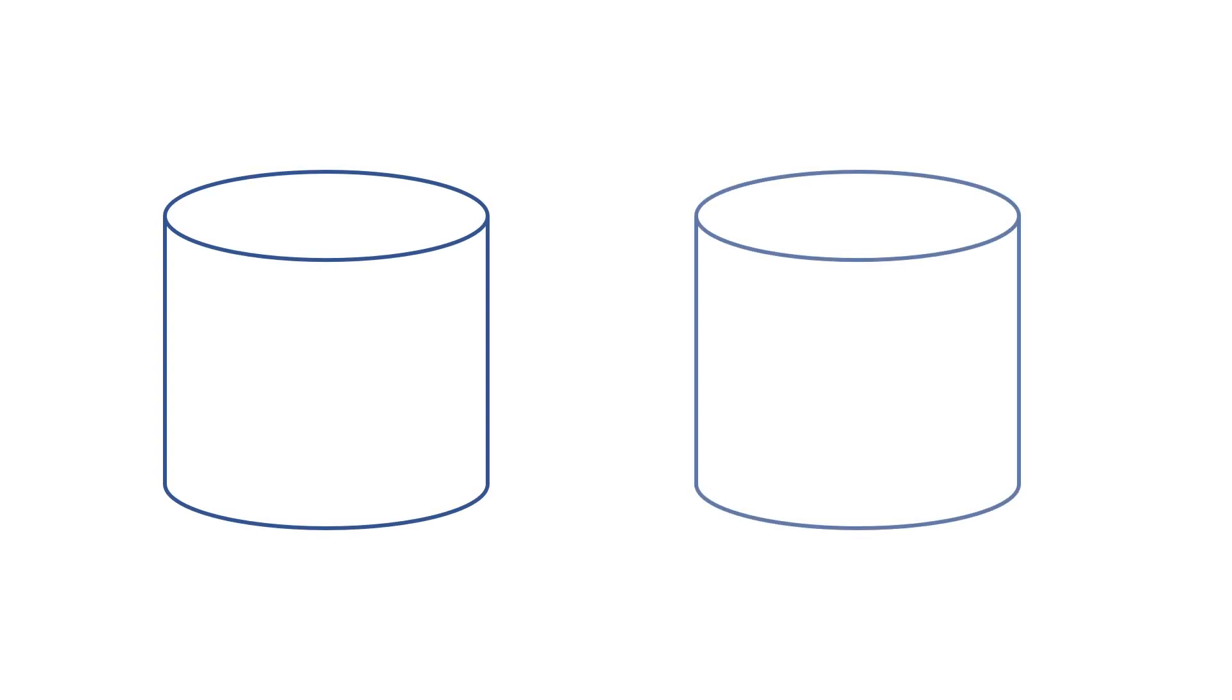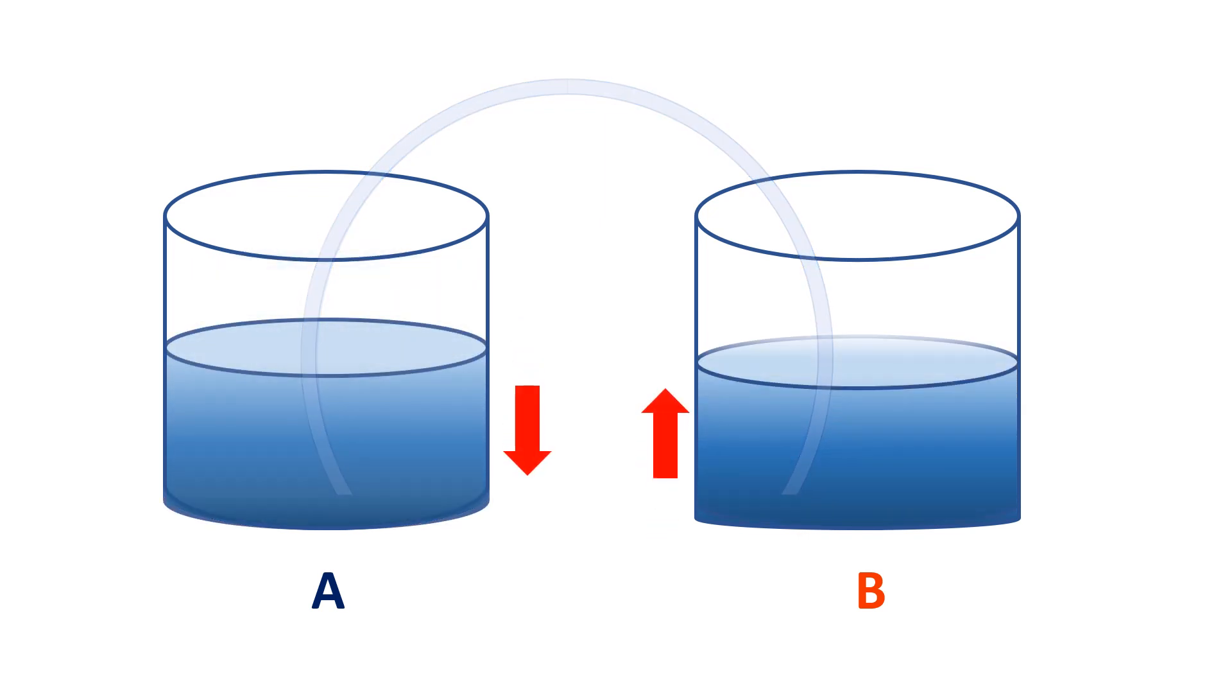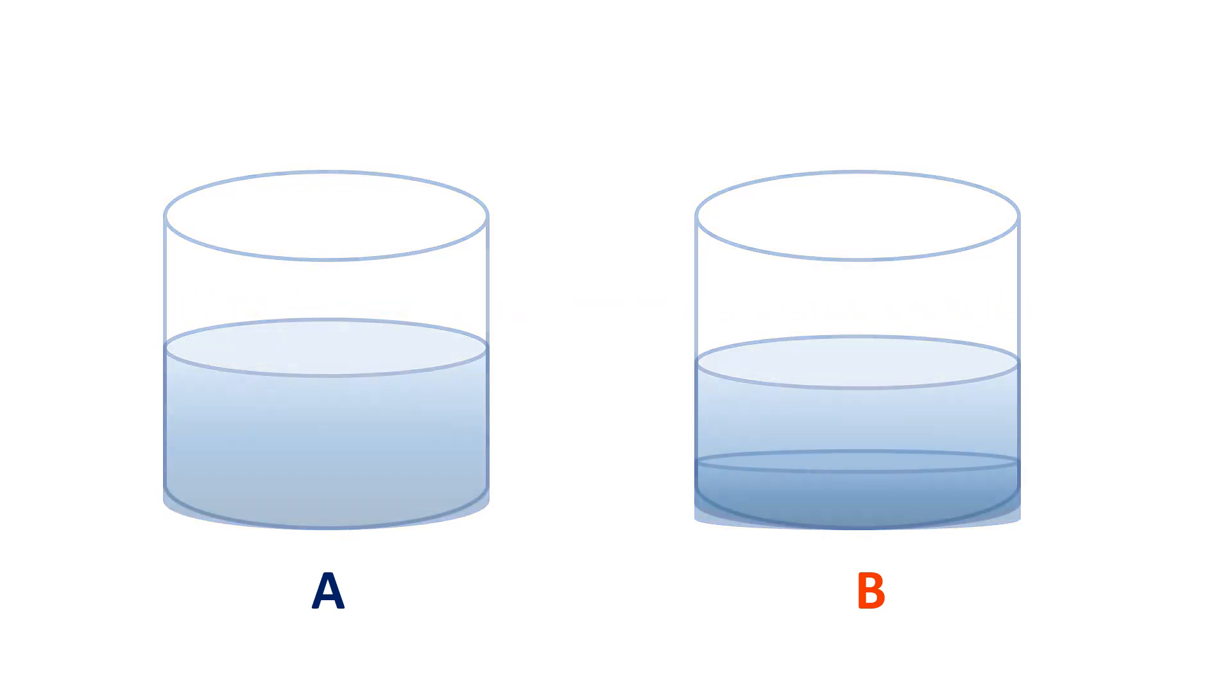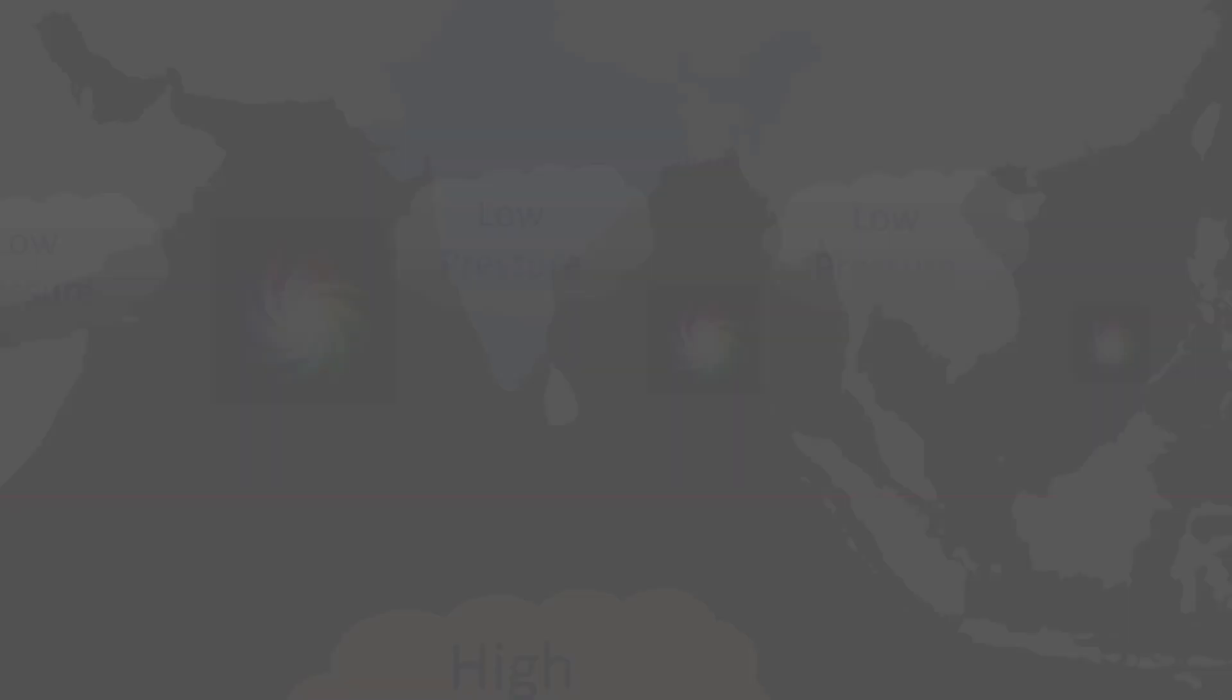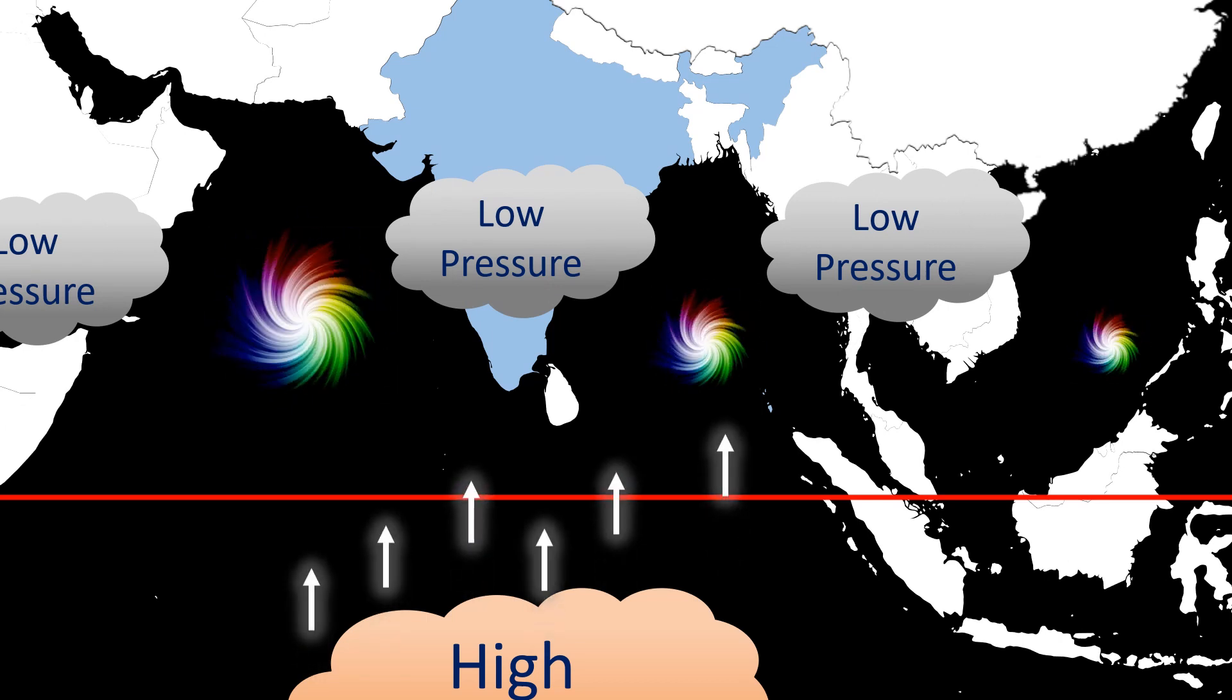Take two beakers of water. Beaker A has more water and beaker B less water. Connect these two with a hose. What happens? Water in beaker A experiencing high pressure flows into beaker B, which has less water and so less pressure, thus maintaining an equilibrium. The large volume of air, signifying high pressure, moves towards the low pressure area.